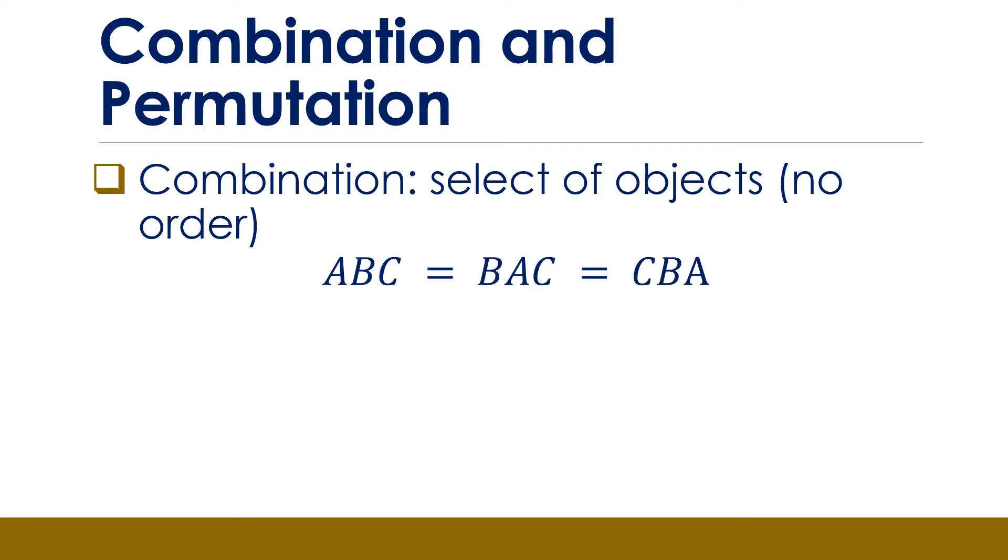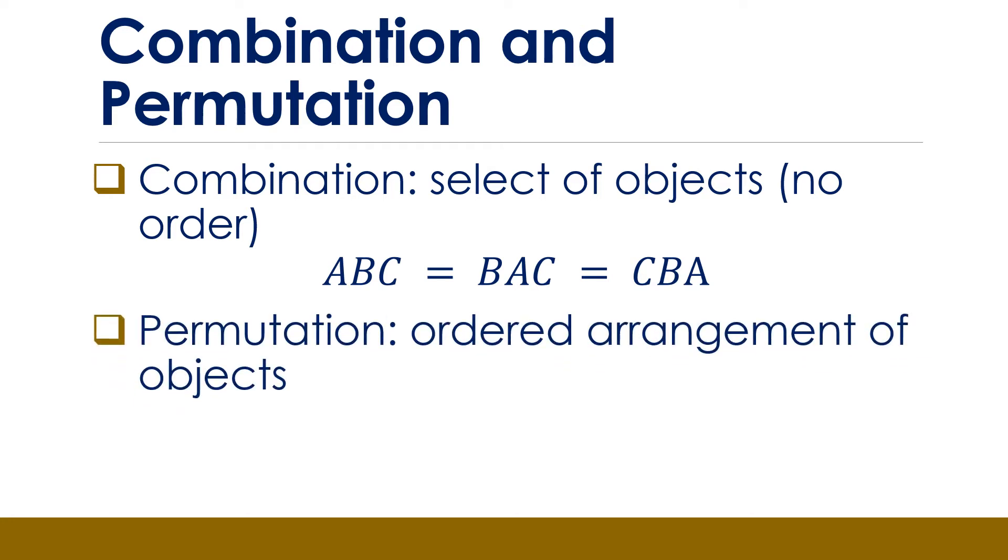But for permutation, which is the ordered arrangement of objects, order is important. Suppose A, B, C represents a combination lock, then B, A, C would not open the lock, therefore the order is important. We can then see that A, B, C will be different from B, A, C and it will be different from C, B, A.